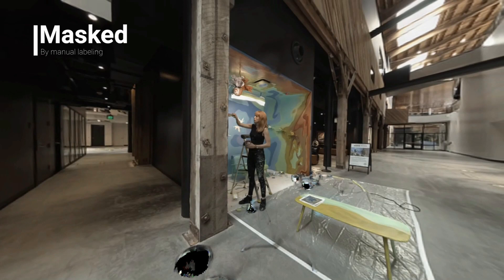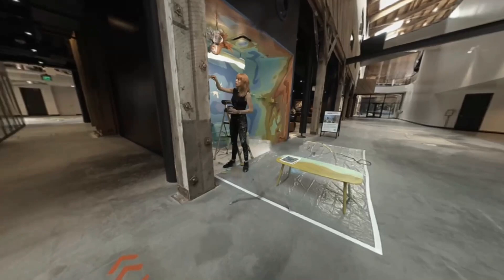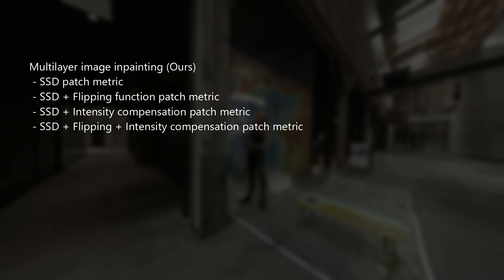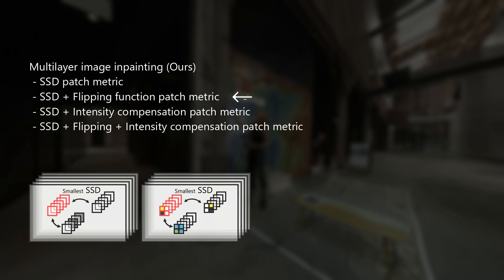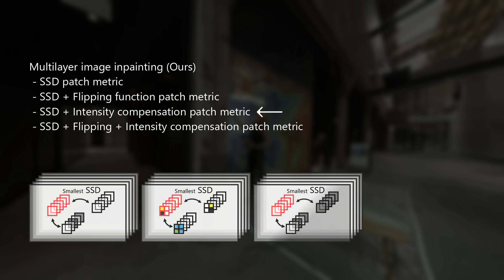Since we are the first to tackle this problem, we implemented multiple solutions to utilize conventional image in-painting algorithms to remove objects in the final multilayer scenes. The simplest approach finds patches that take the minimum sum of squared differences and merges the patches to synthesize the missing pixels. The next approach also finds flipped patch versions to increase available patch variations. The third approach compensates for differences in patch intensities when searching for the best matching patches. The last approach uses the previous two patch metrics in combination.